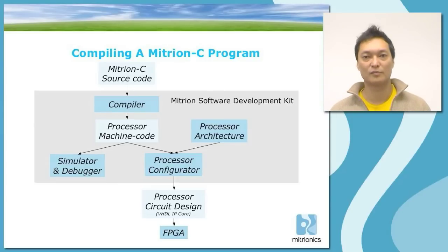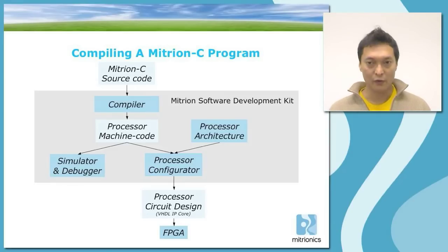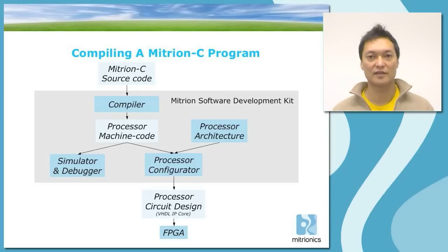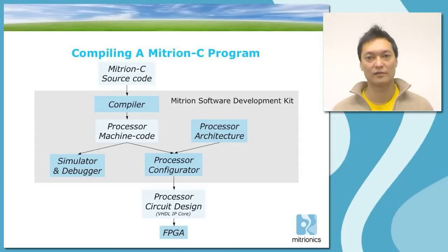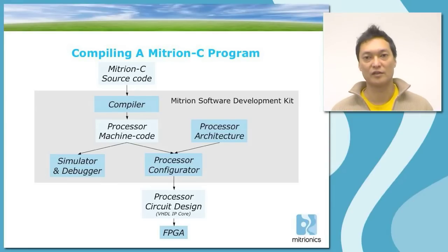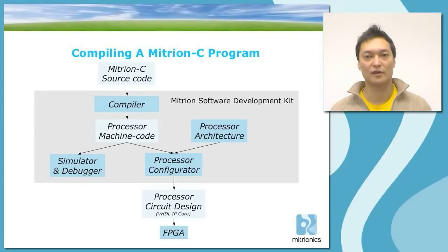However, usually you will not be able to write a program that will be completely bug-free from the start. Most programs will need some kind of debugging. To do this, we also have a simulator and a debugger. The simulator is capable of simulating the Mitron Virtual Processor and executing the processor machine code within a standard computer. So, for example, even on a laptop without an FPGA at all, you will be able to execute Mitron C code in the simulator. Once you have debugged your program, you will go back to your source code, rewrite those portions that turned out to be erroneous, and compile and debug again until you get to a point where your program actually does what it should do. At that point, you will configure a processor and go through the process of getting a processor into your FPGA.